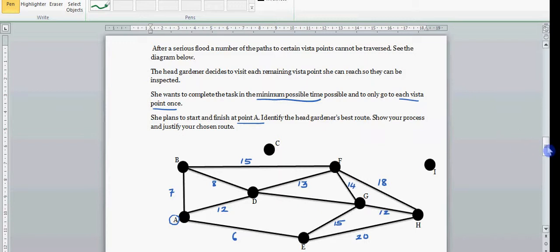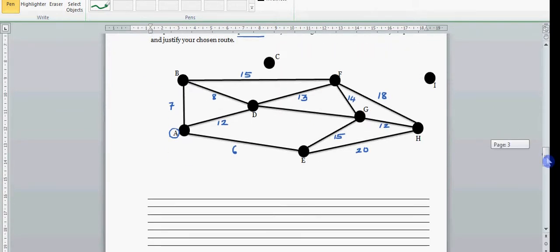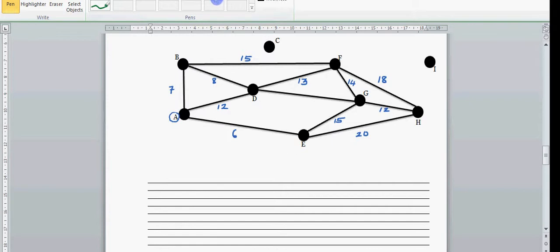First, try one path, then I'll show you the logic why you can find a better path. Let's go from A to B. I'll write the numbers beneath it, so A to B is 7.